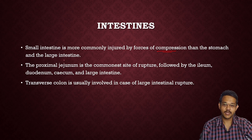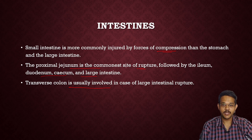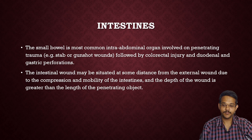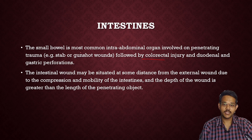The proximal jejunum is the commonest site of rupture, followed by ileum, duodenum, cecum, and large intestine. The transverse colon is rarely involved in large intestine ruptures; the commonest part of large intestine rupture is the transverse colon. The small bowel is the most common intra-abdominal organ involved in penetrating injuries caused by stab or gunshot wounds, followed by colorectal injury and duodenum and gastric perforation.